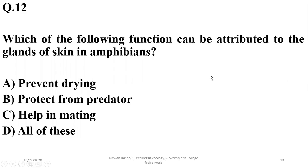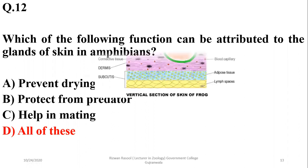Which of the following functions can be attributed to the glands of the skin in amphibians? The different glands found in the skin of amphibians help in prevention of drying, help protect from predators, and help in locating mates as well. So the right option is D.